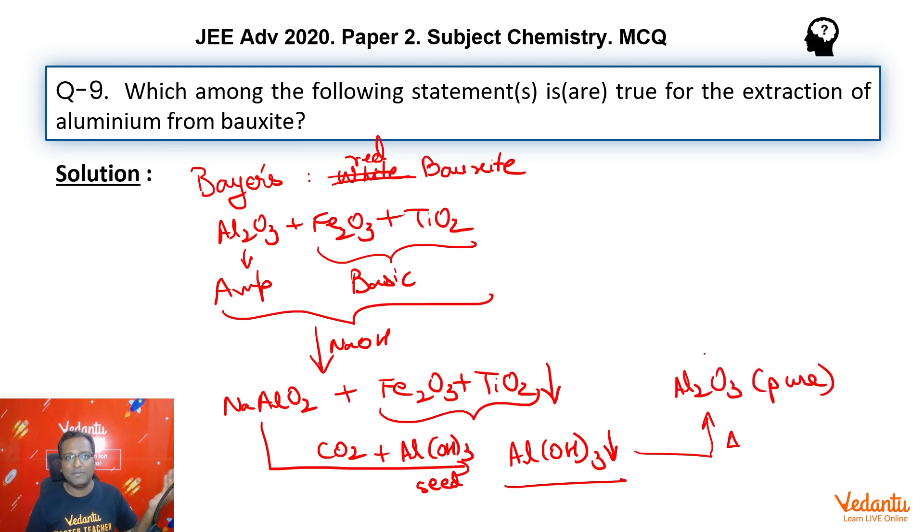What do we do ahead with this pure alumina? We take this pure alumina, add Na₃AlF₆ and CaF₂ - cryolite and fluorospar - and make it undergo electrolysis in molten form. What is the purpose of adding these two? The purpose is lowering down the melting point and increasing the conductivity of the system.